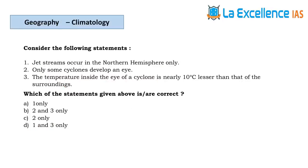The next question is tricky — jet streams occur in the northern hemisphere only. Whenever 'only' appears in a statement, be very careful. Jet streams also occur in the southern hemisphere. Jet streams are upper air circulations. So when statement 1 is wrong, eliminate those two options.